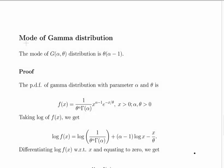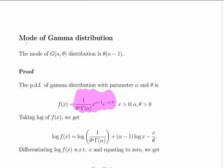Lastly, we look at the mode of the gamma distribution. We want to show that the mode is also equal to theta times alpha minus 1. The probability density function of the gamma distribution with parameters theta and alpha is given, and we want to set its derivative equal to zero. However, rather than differentiating the PDF directly — which is complicated — we use the fact that whatever maximizes the function also maximizes the log of the function, giving us a simpler approach.